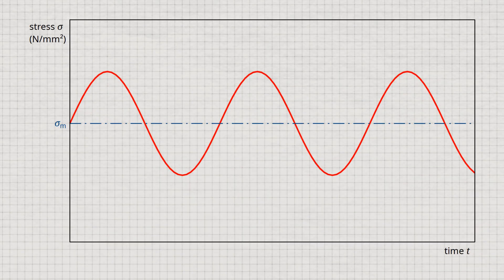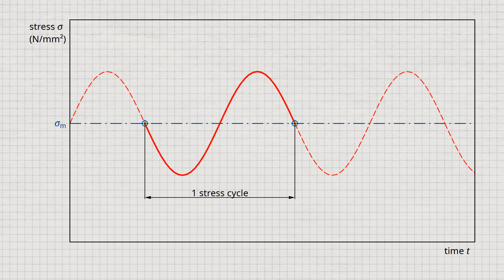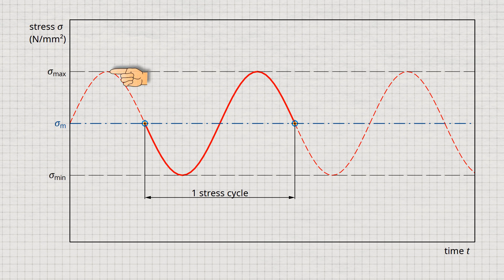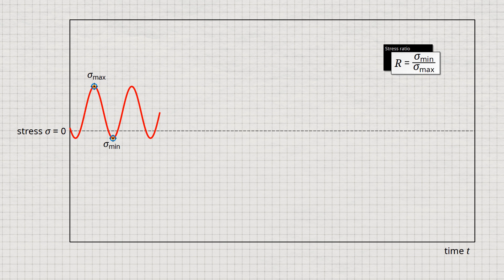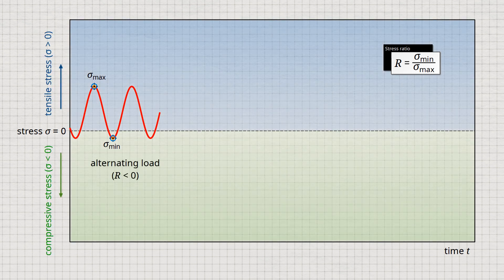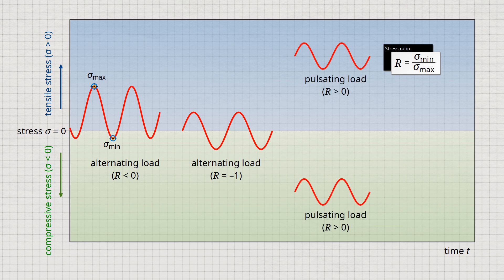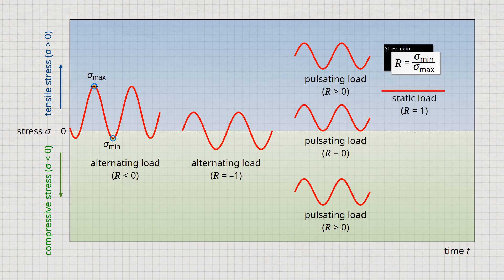A complete cycle through the different stress states is called a stress cycle or load cycle. The stress varies during a load cycle between a maximum stress sigma max and a minimum stress sigma min. The mean stress sigma m results from the mean value of these limit stresses. The stress amplitude is denoted by sigma a. The ratio of minimum and maximum stress is called stress ratio r. In the case of alternating stress, the stress ratio is negative, as the maximum and minimum stresses differ in sign. A pure alternating stress is present at a stress ratio of minus 1. Stress ratios greater than 0 indicate pulsating stress, and at a stress ratio of 0 there is a purely pulsating stress. At a stress ratio of 1, the maximum and minimum stresses are identical, corresponding to the limit case of static loading.